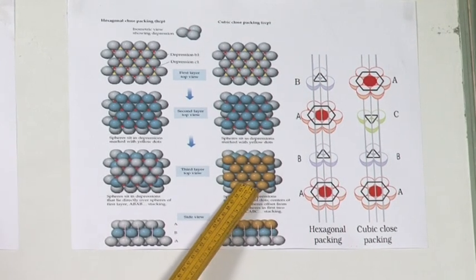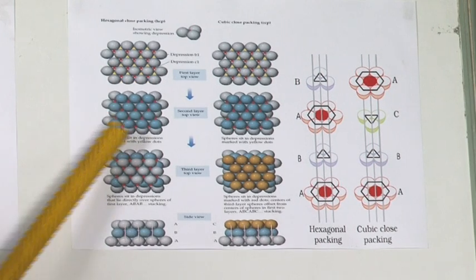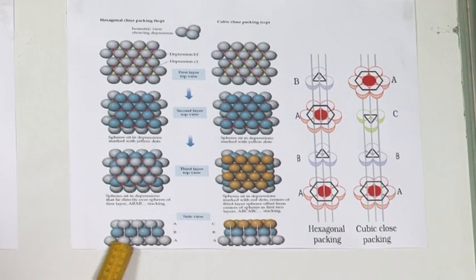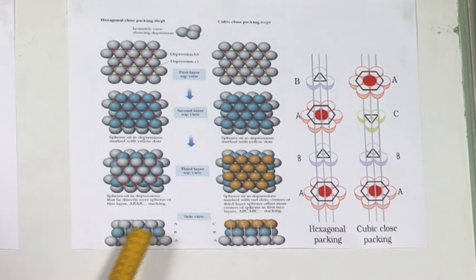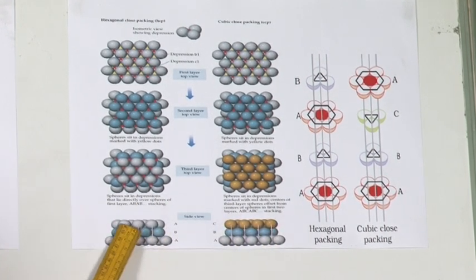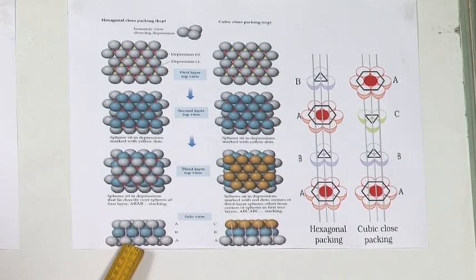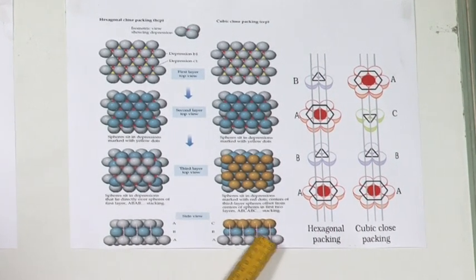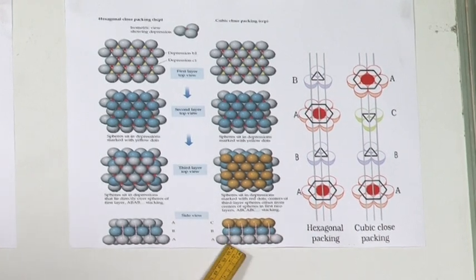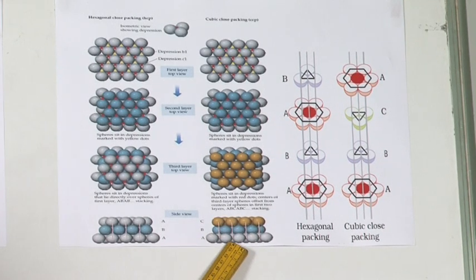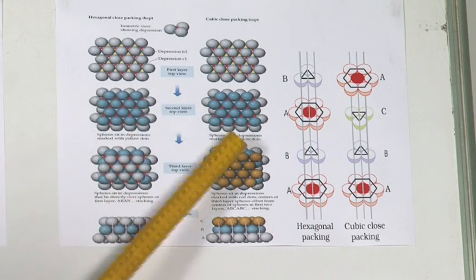If you look at the way the crystal is being created: the first layer of spheres, then the second layer with blue spheres. When you come to the third layer made by white spheres, you can see the white spheres are directly above the first layer. Whereas in the next figure, the spheres on the third layer which are yellow are coming neither above the first layer nor the second layer — they form a separate layer.